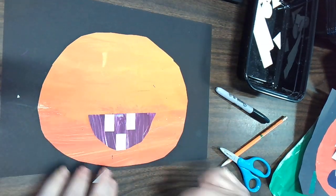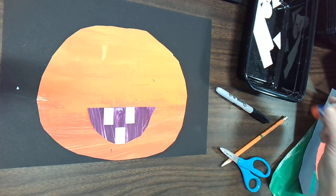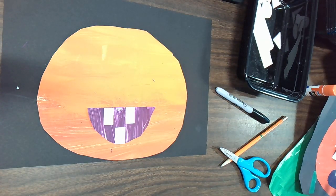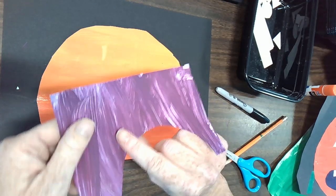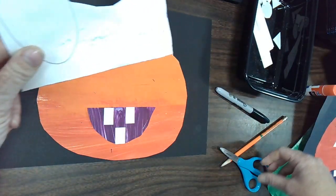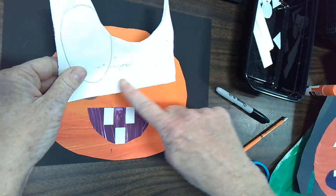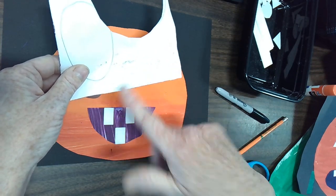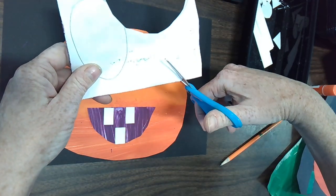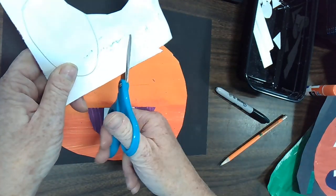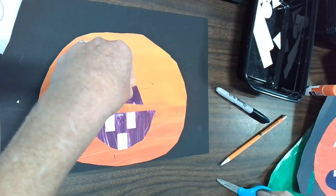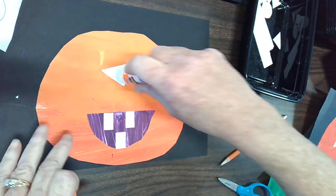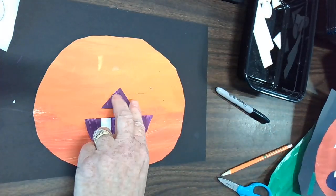Then I need to make a nose. Now you can make pumpkin noses all different shapes. I'm going to use that same purple paper. I'm going to turn it over. You can draw a shape first, a circle, a triangle, a square, or you could even just free cut a shape, which is kind of a fun way to do it. I'm going to make a triangle nose for my pumpkin. Put a little glue on the back and stick it down.